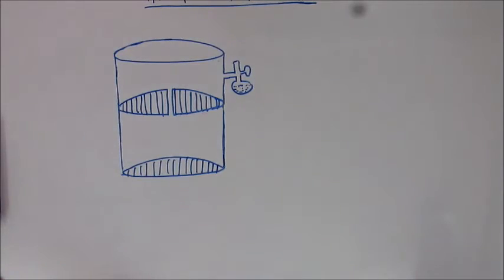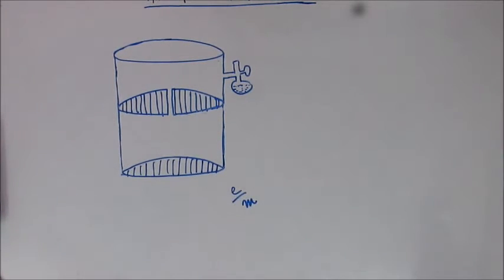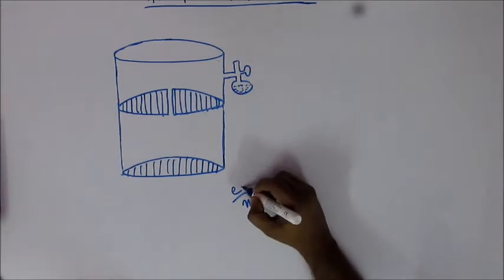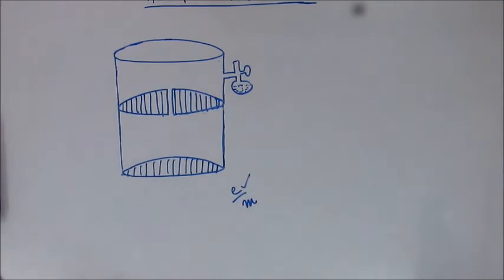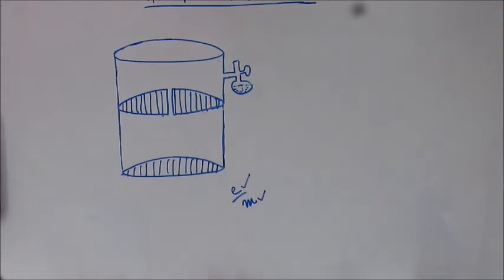Previously you studied the discovery of the electron and the e/m ratio of the electron. J.J. Thomson could not find charge and mass independent of each other — all he could do was find the ratio e/m. A few years later, Millikan performed an experiment in 1906 and found out the charge of the electron independent of mass, and hence the mass of the electron, because the e/m ratio was already known.